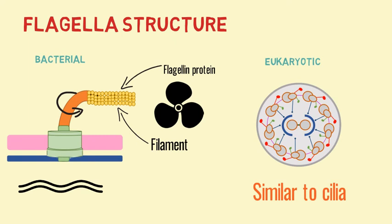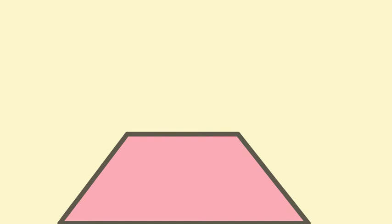Eukaryotic flagella are similar to cilia as they are composed of microtubules that have a membrane and move in a bending fashion. And that is the difference between cilia and flagella.